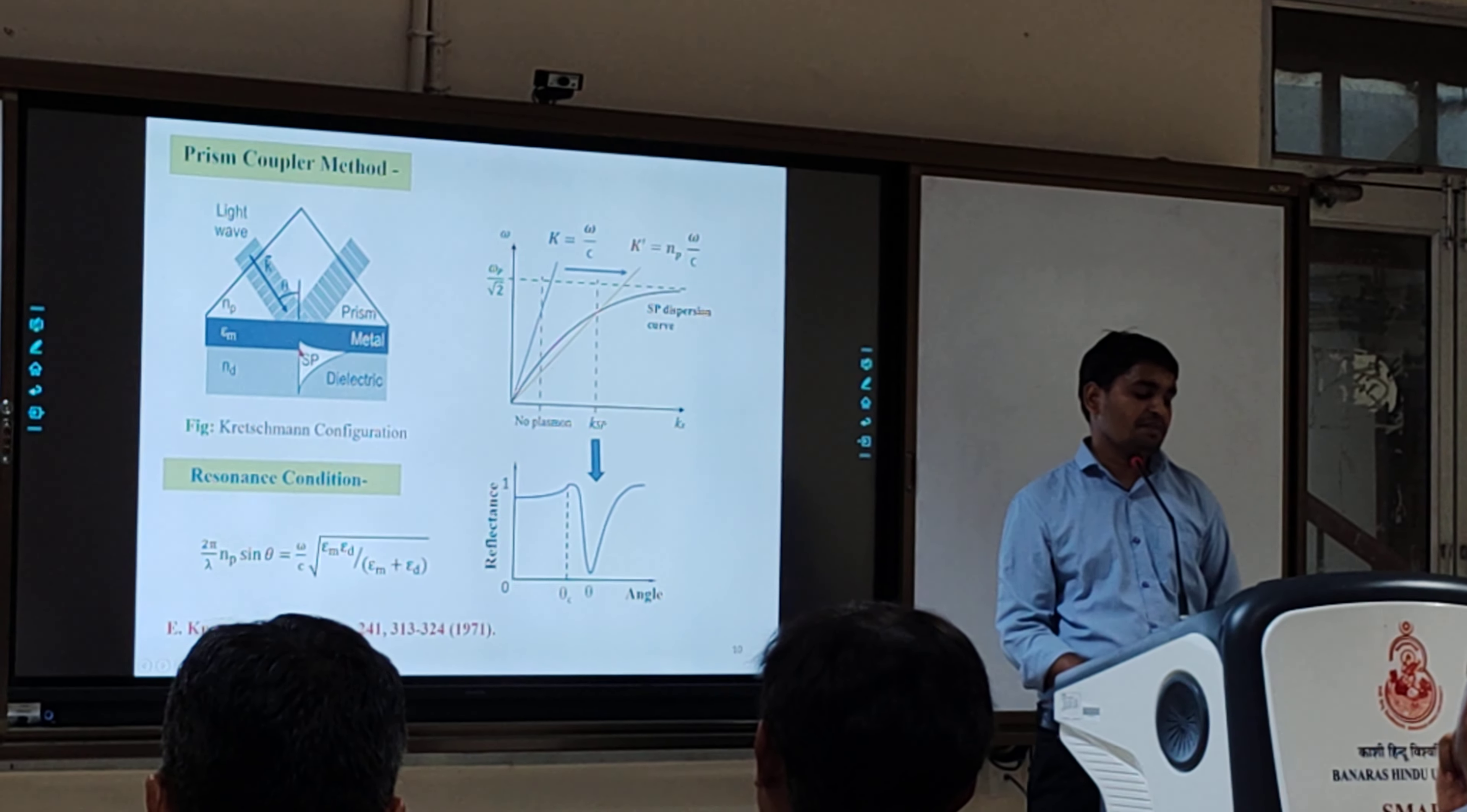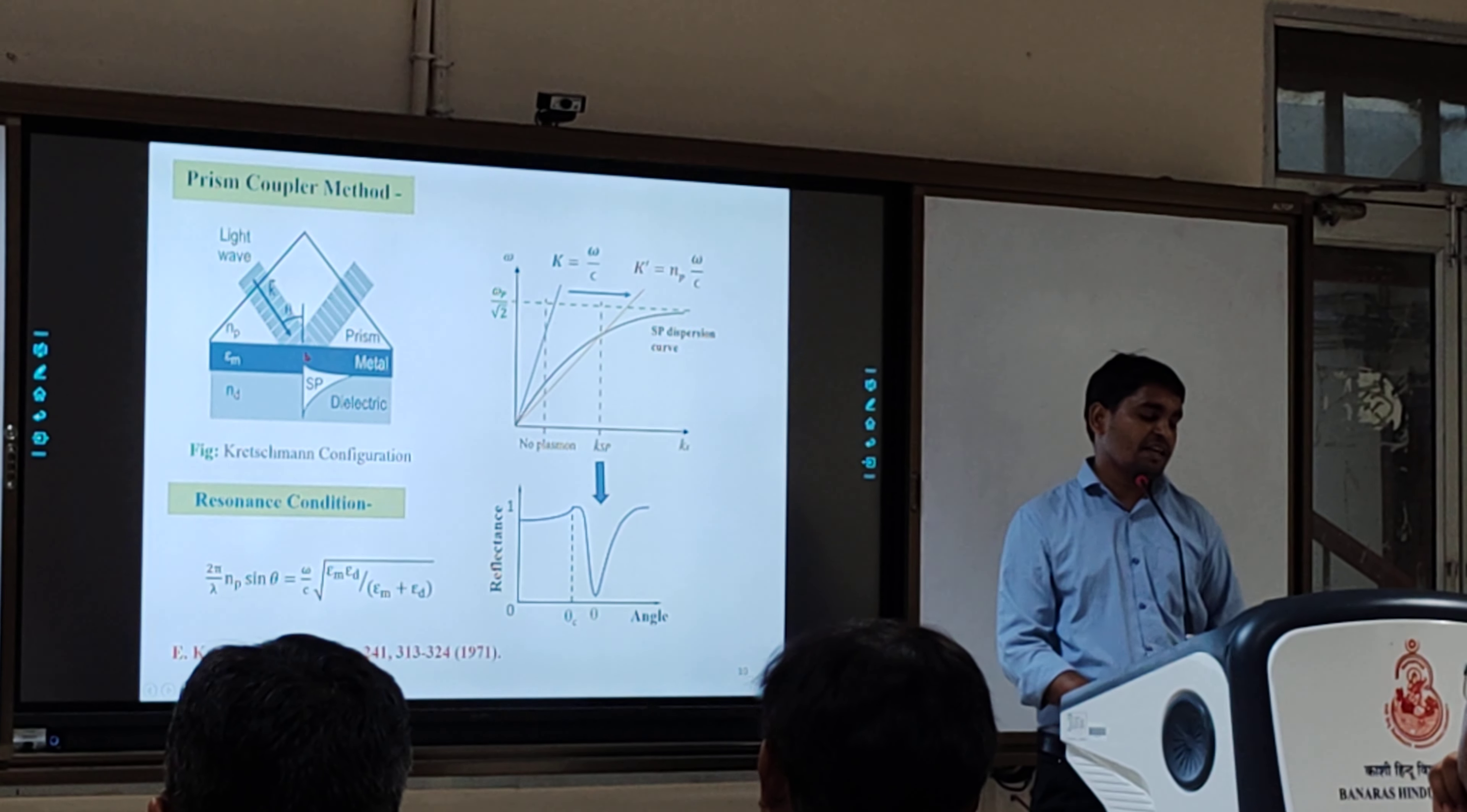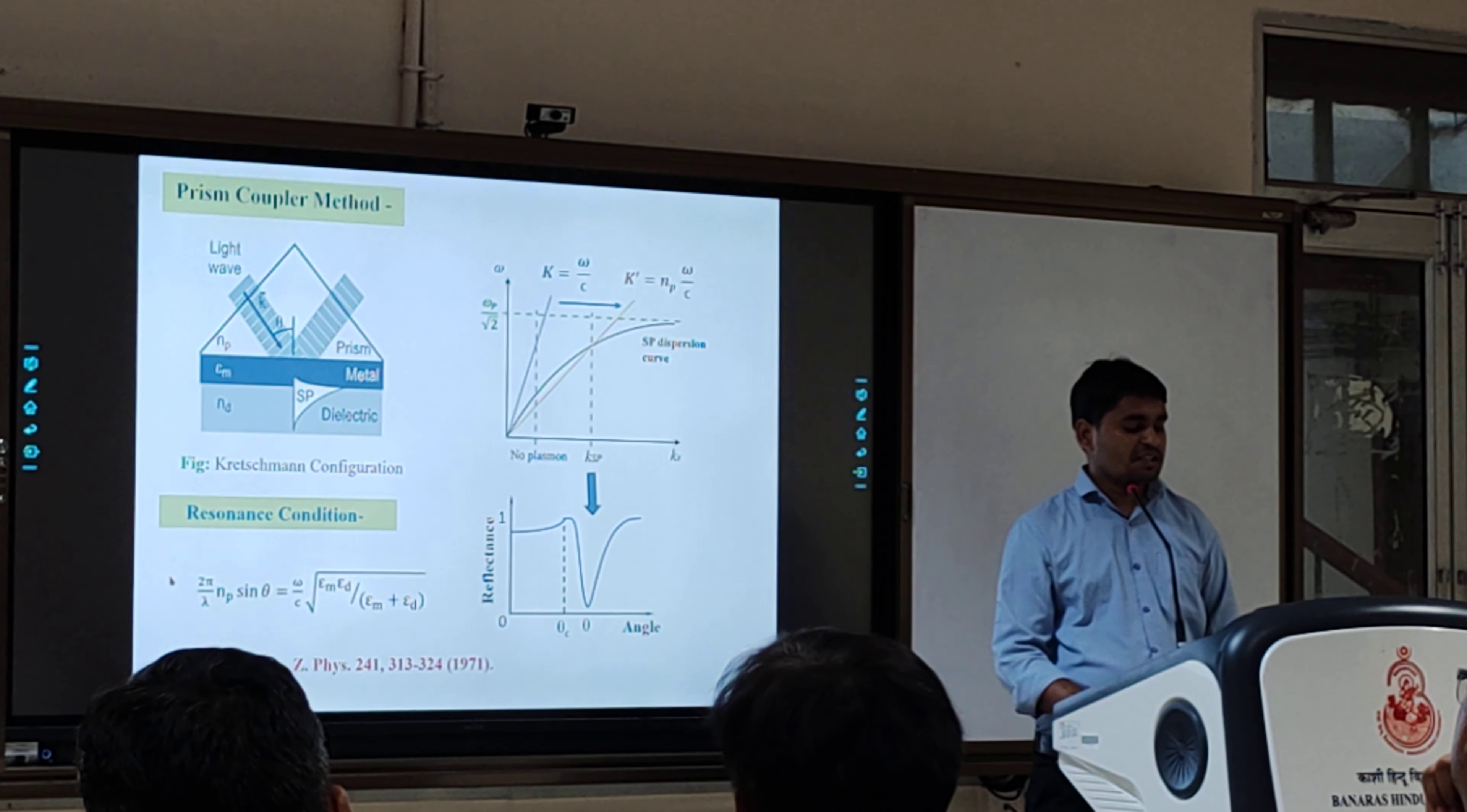When p-polarized light is incident through one face of the prism at the surface, the surface plasmon is excited and the reflected light emerges from the other side of the prism. The resonance condition is given by this relation.